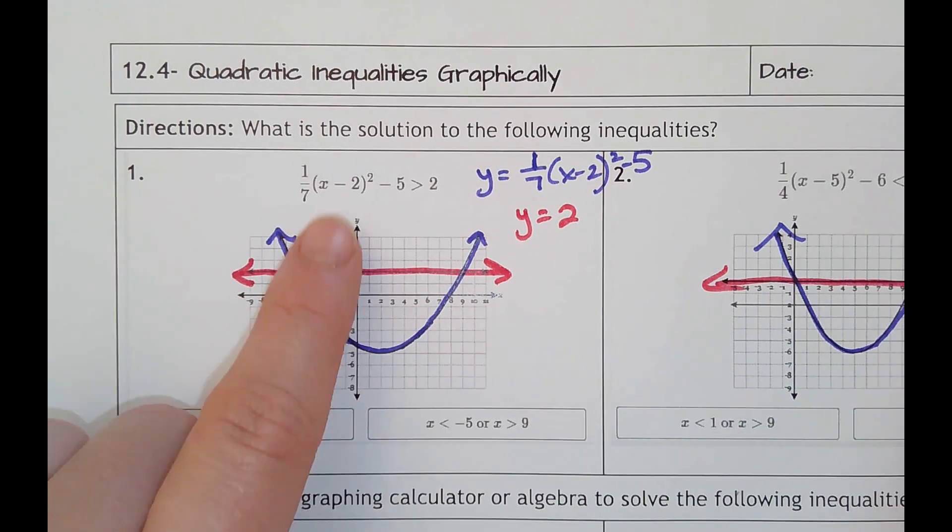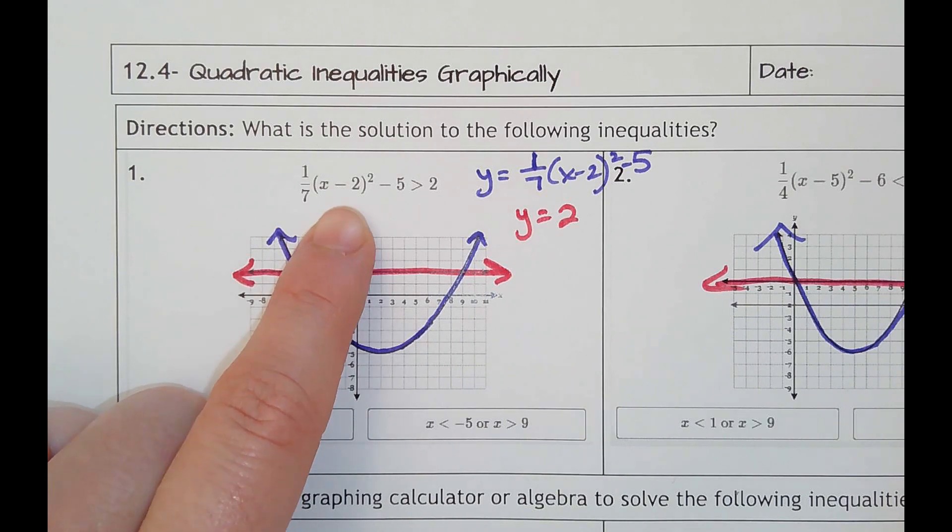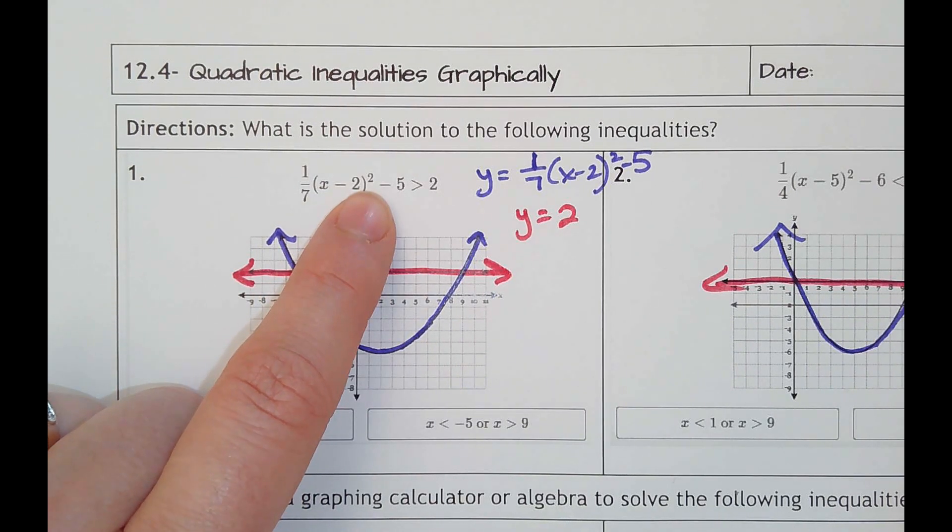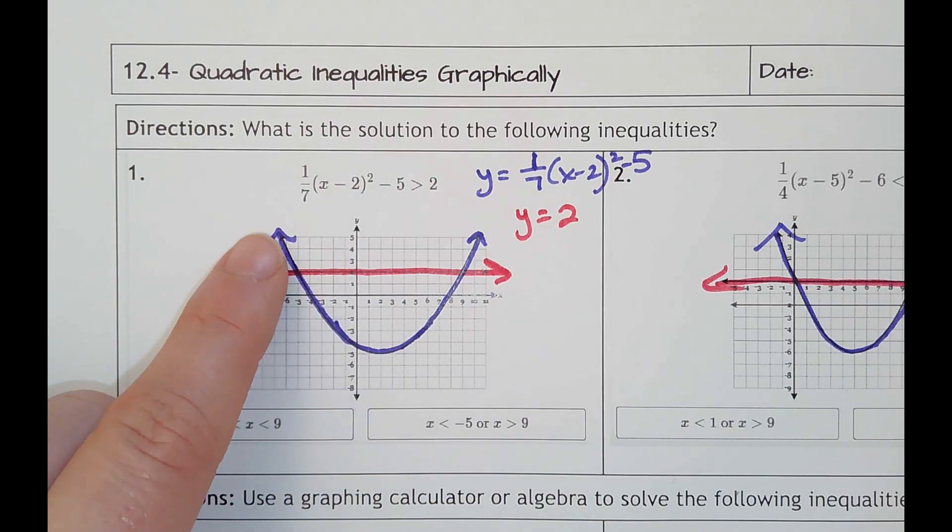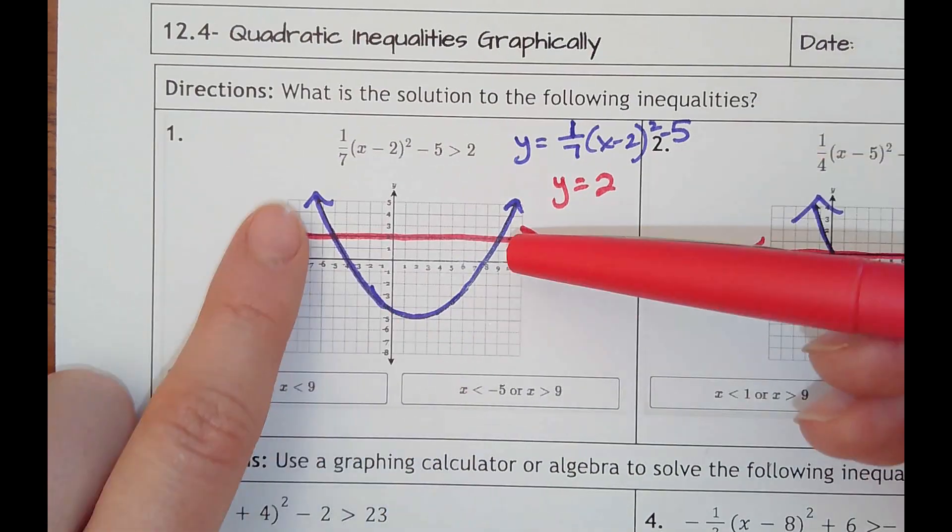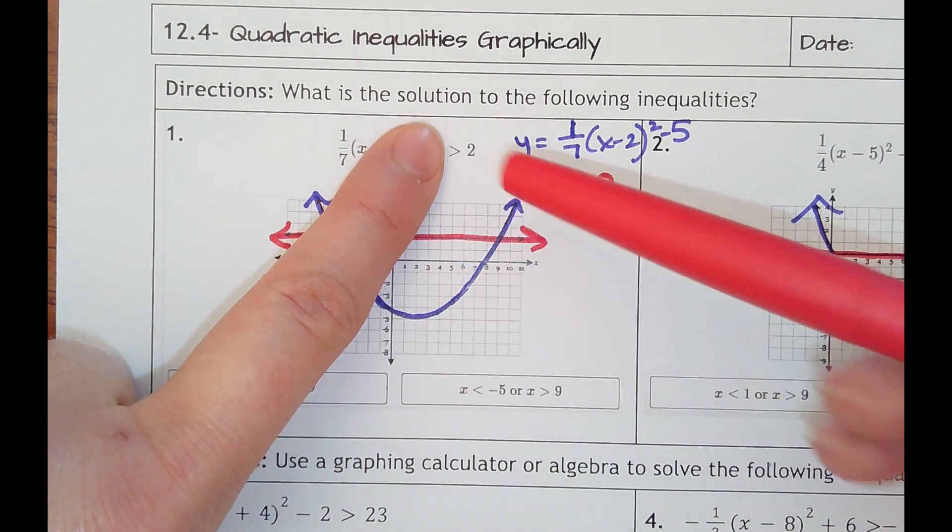So on number one, they're graphing 1/7 times (x - 2)² - 5. As soon as you see an x being squared, that makes it a quadratic, which is going to make this parabola shape. When purple is the quadratic, then I have y equals 2 in red, a horizontal line.